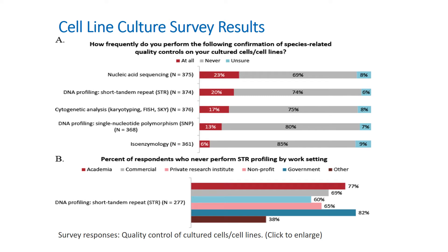Accurate documentation of cell line tissue of origin, sex, and species are critical to ensure the credibility, reproducibility, and translation of data and results from cell culture based experiments.